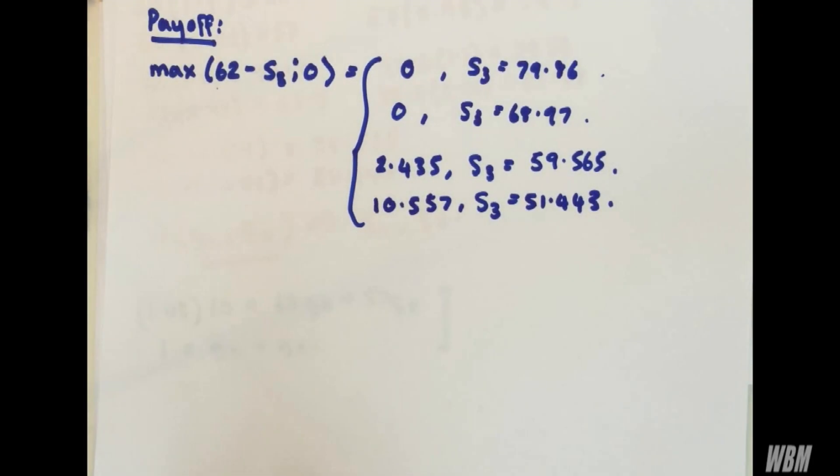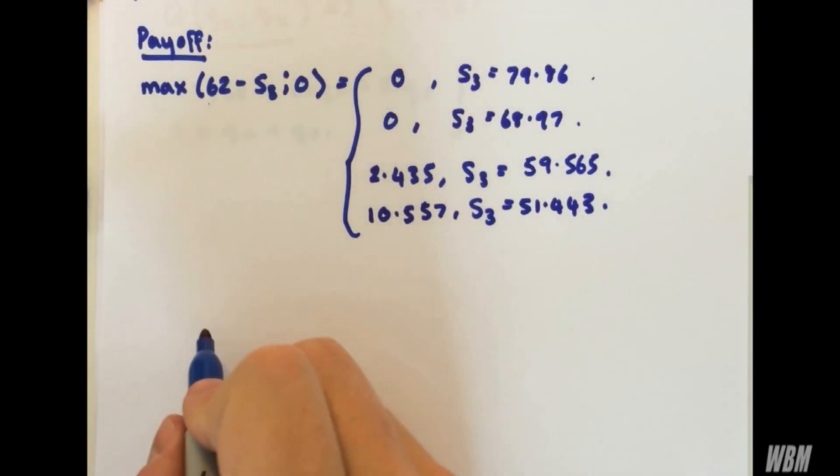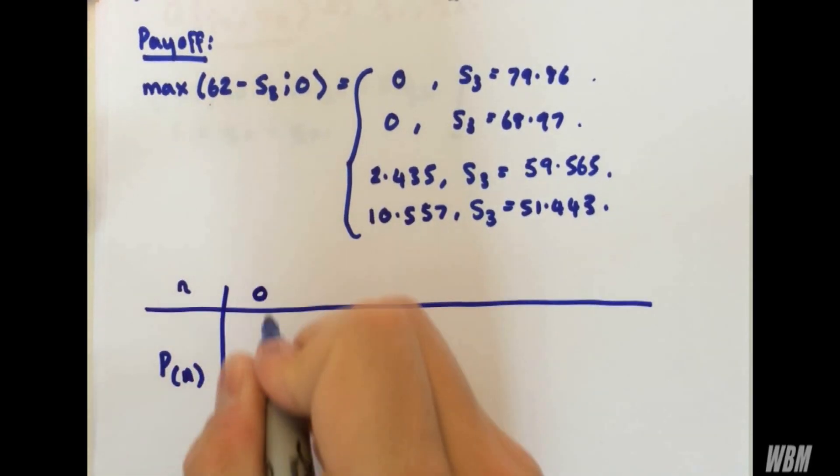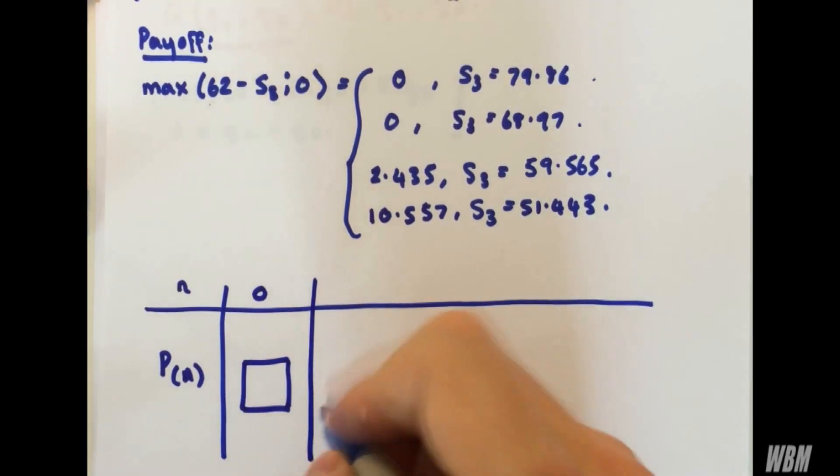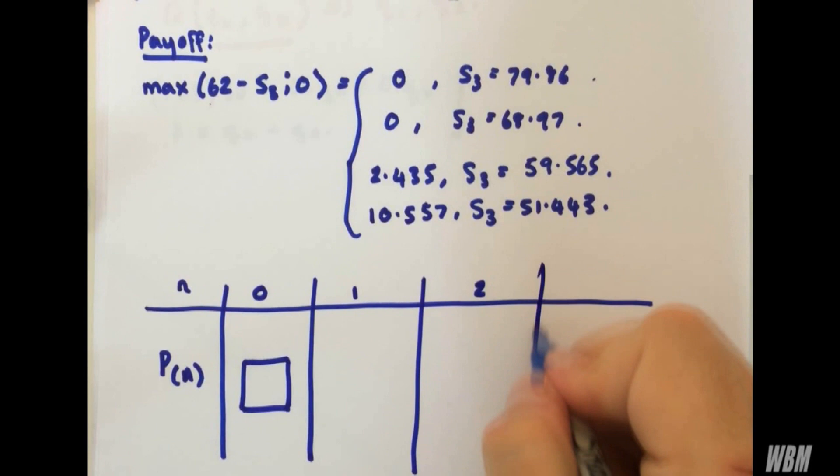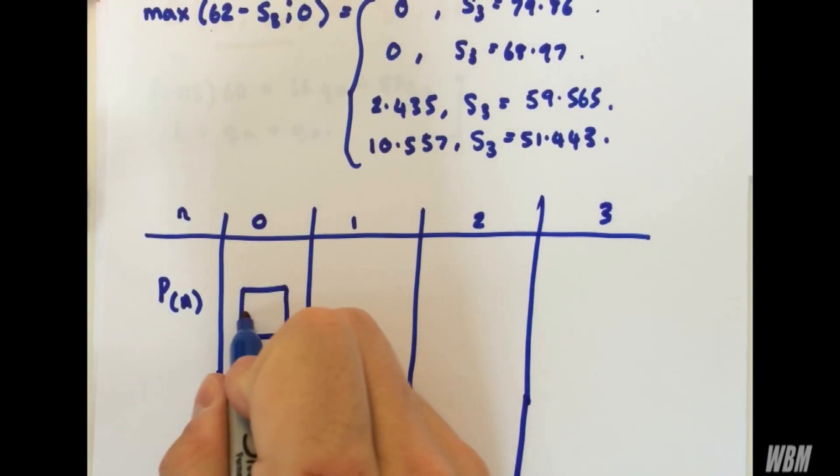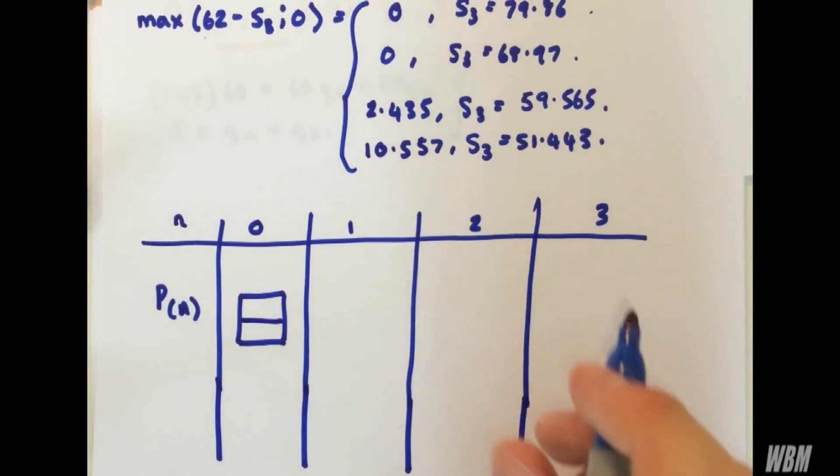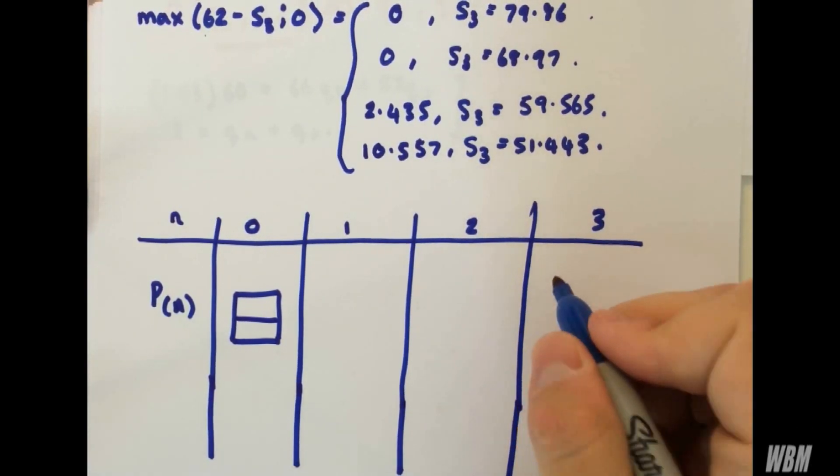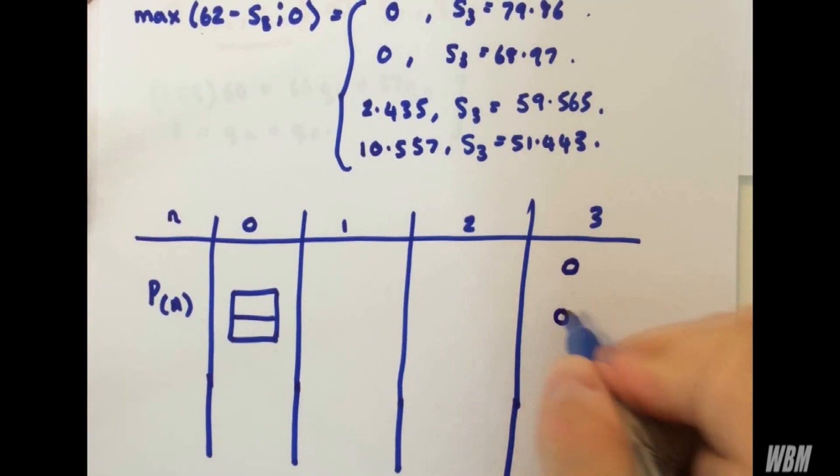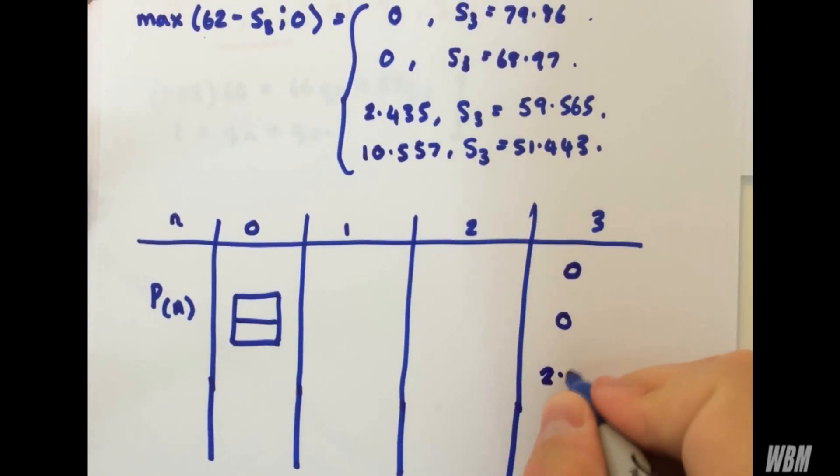So what we want to do now is redraw our binomial tree once more as we're looking to solve it finally now. We have our put value for an American put. I'll just draw a little table here. Now we have time step 0, time step 1, 2, and 3. So up here we had 79.86, and that gives us a payoff value of 0. We have a 0, a 0, a 2.435, and a 10.557.